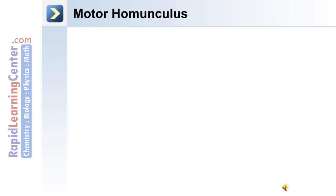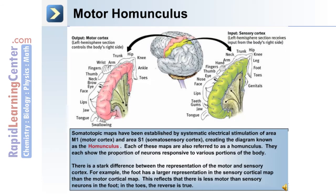The image in this slide depicts both the motor and the sensory somatotopic maps. Somatotopic maps have been established by systematic electrical stimulation of area M1 for the motor cortex and area S1 for the somatosensory cortex, creating the diagram known as the homunculus. Each of these maps is also referred to as the homunculus, and they each show the proportion of neurons responsive to various portions of the body.